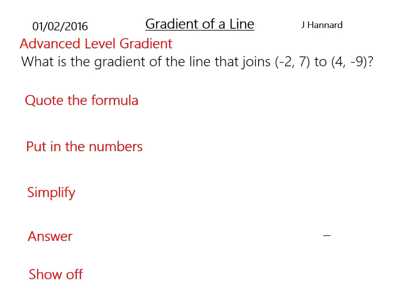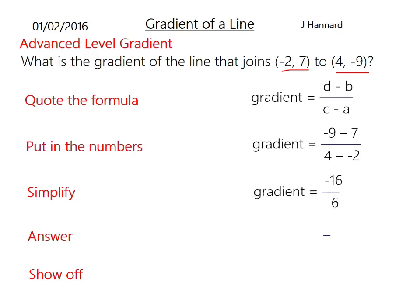Do another one. What is the gradient of the line that joins (-2, 7) to (4, -9)? Quote the formula: back take back over front take front. Put in the numbers: minus 9 minus 7 over 4 minus minus 2. Careful of that double negative. You'll get minus 16 over 6, and that will cancel down to minus 8 over 3. If you want to show off, we can do the perpendicular gradient of that, which will just be a positive 3 eighths.